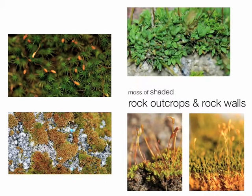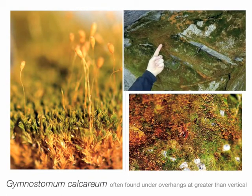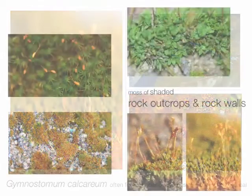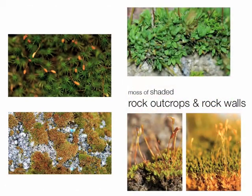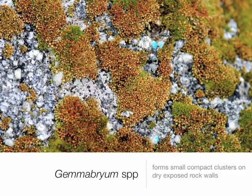If you have a rock wall — vertical or possibly an overhang — it would be very possible to find Gymnostomum calcareum, very common to overhang habitats, occurring in one continuous dense layer. Our next genus is also very common to exposed rock walls — this is Gemmabryum, also an unresolved genus.